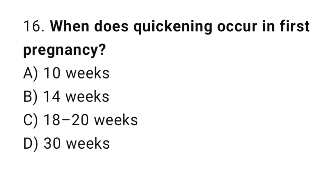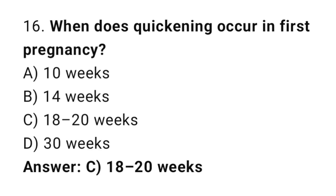Question 16: When does quickening occur in the first pregnancy? The right answer is C, 18 to 20 weeks. The first fetal movement is felt at 18 to 20 weeks.